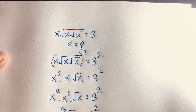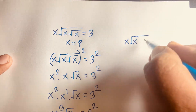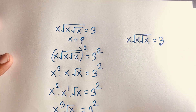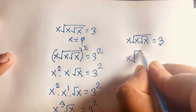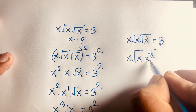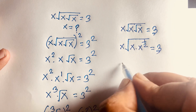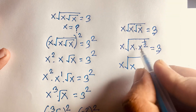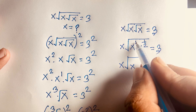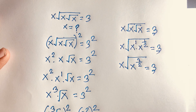Now let's solve using another method. Looking at the original equation, x times square root x, times x to the power half — that square root x — equals x to the power half, equal to 3. Using exponential rules, the exponent 1 plus one half gives 3 over 2.